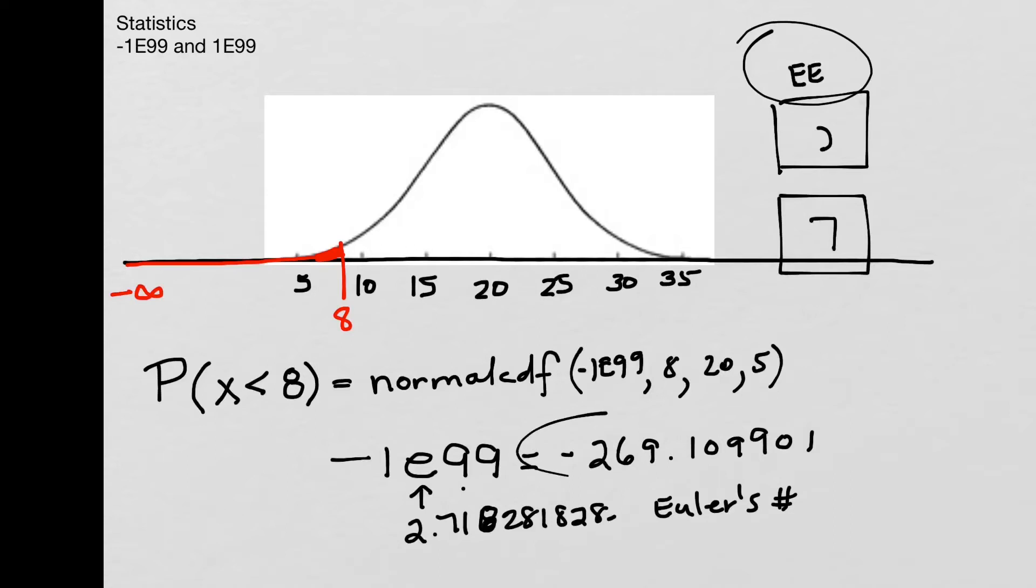So when we get a value like this, negative 269, well, where would that be in my graph here? It would actually be pretty far out here already. So once you get more than three standard deviations away from the mean, pretty much anything is going to work, to be honest.